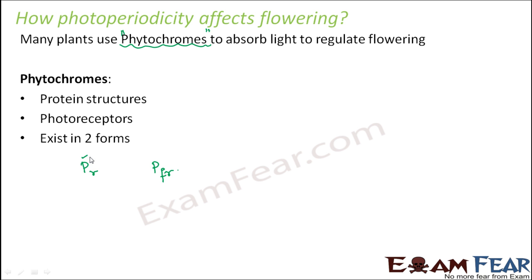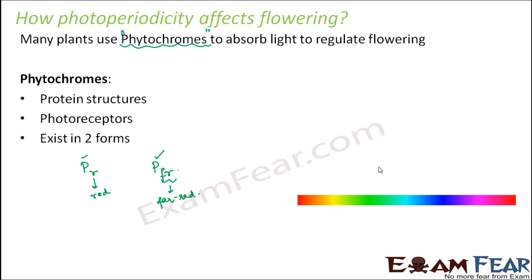In 'Pr', P represents phytochrome and R represents red light. In 'Pfr', P represents phytochrome and FR represents far-red light. This means there is one form of phytochrome which absorbs red light from the spectrum, and another which absorbs far-red light. So Pr absorbs the red light of the spectrum, and Pfr absorbs the far-red light — the other end of the spectrum.